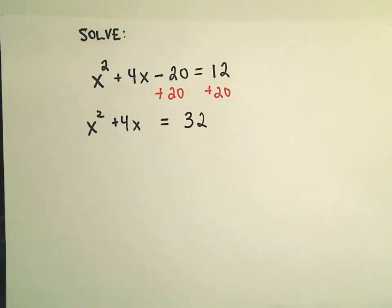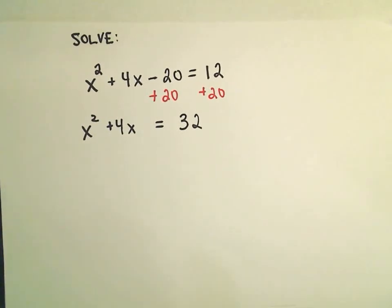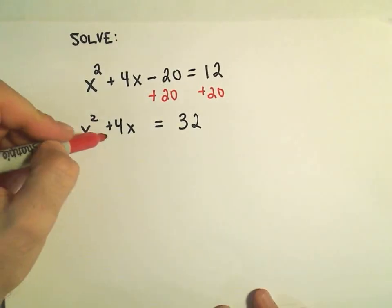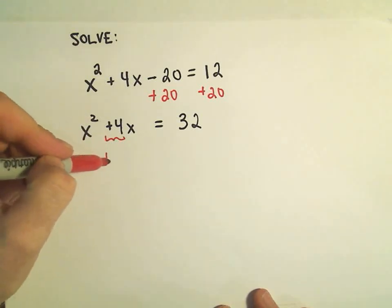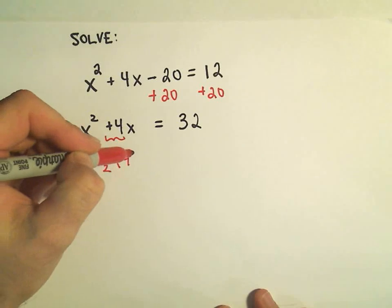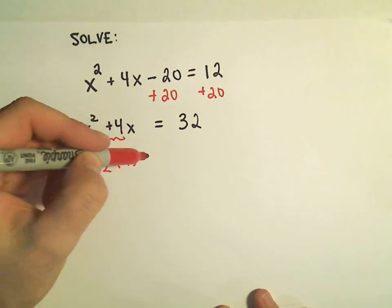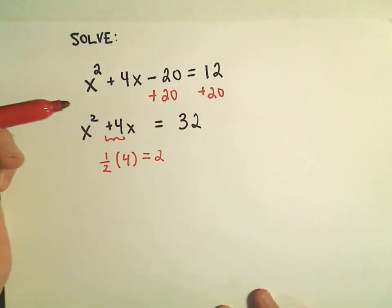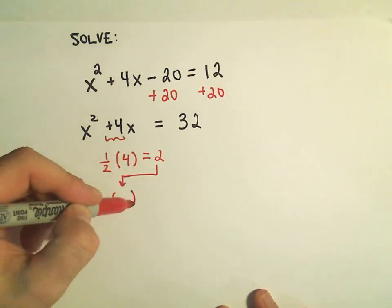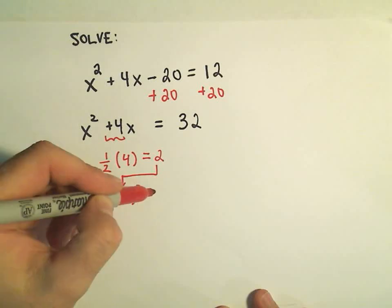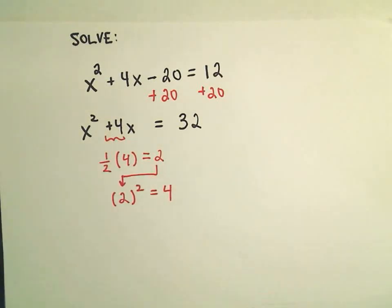And now the completing the square step. The idea is we're going to make the left side into a perfect square by doing this following procedure. So whatever number's in front of the x, the coefficient on the x, what we do is we take one half, always one half of that number. So one half of 4 is simply going to give us 2. And then what we do with that number, we take that number and we square it. So 2 squared is going to equal positive 4.